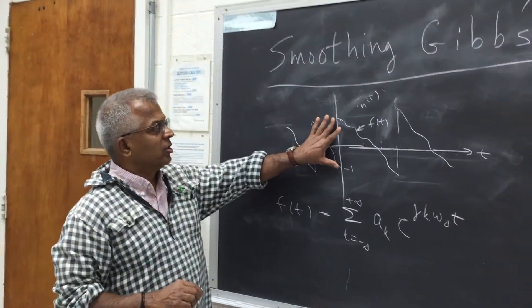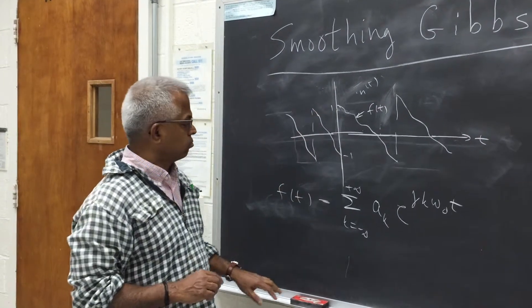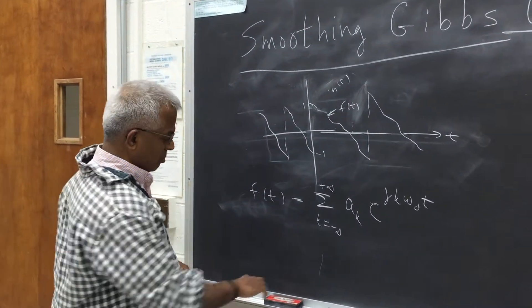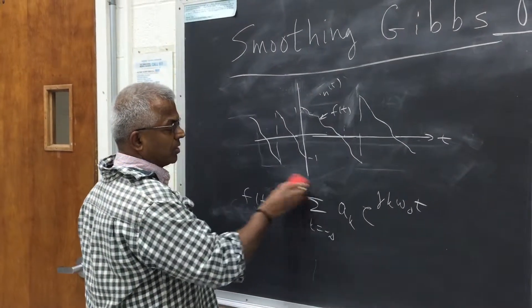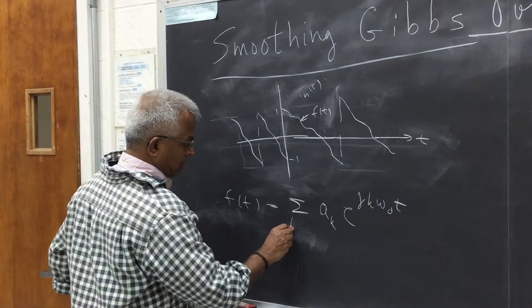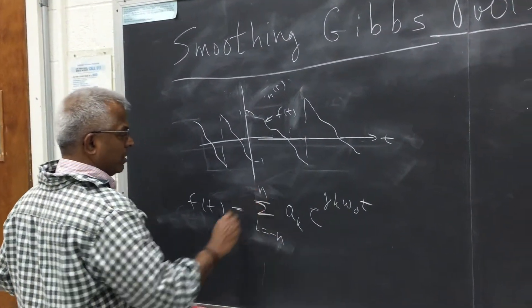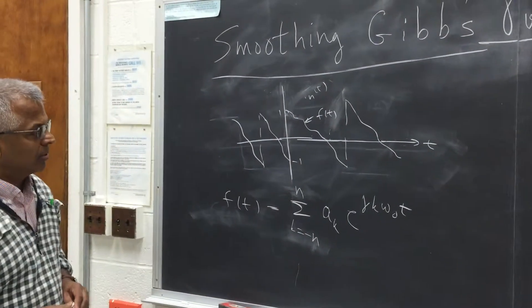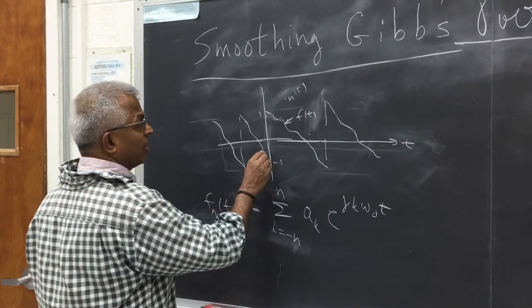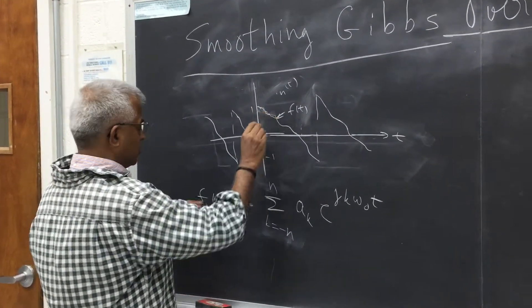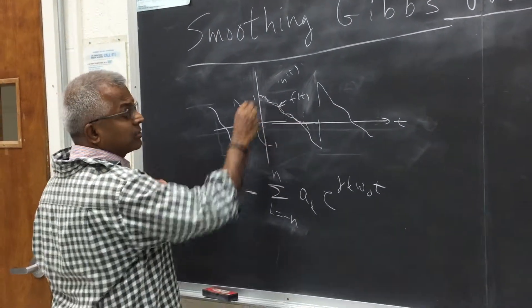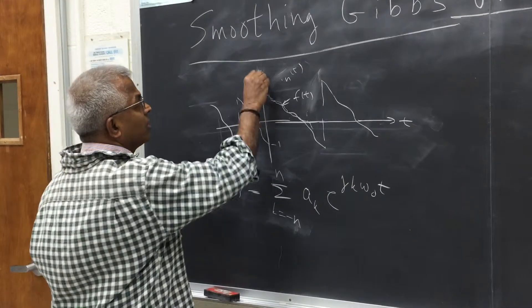But here I have explicitly shown a jump discontinuity. So generally the question is what happens to the partial sum. So let's say k equal to minus n to n. So n terms or 2n terms. I'm going to call this F_n. If you take this partial sum, it will hug the original function everywhere except at the jump discontinuity where there will be